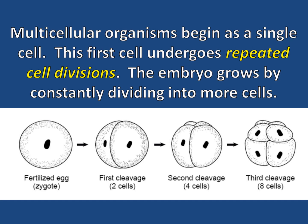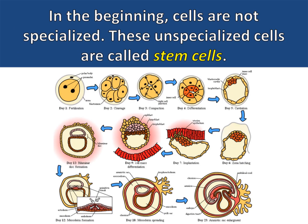Multicellular organisms begin as a single cell. This first cell undergoes repeated cell divisions, and the embryo grows by constantly dividing into more cells. In the beginning, cells are not specialized. These unspecialized cells are called stem cells.